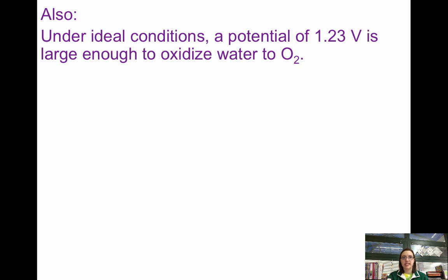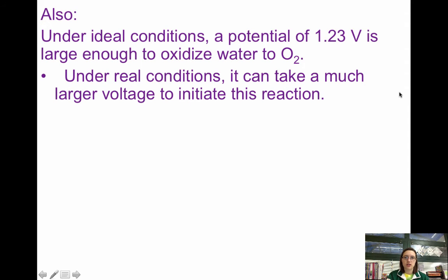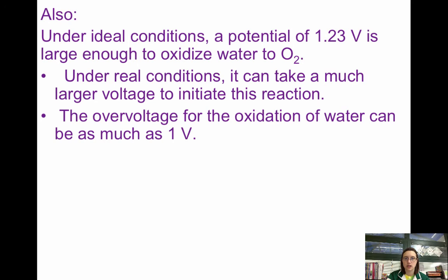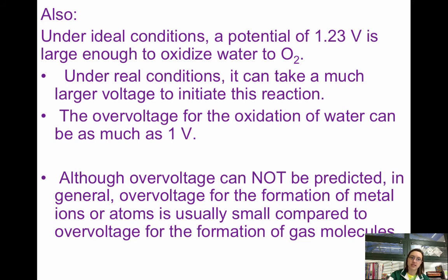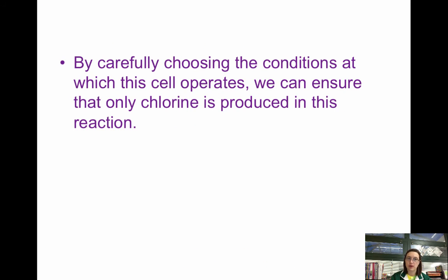Under ideal conditions at standard conditions, a potential of 1.23 V is large enough to oxidize water to O₂. Under real conditions, it can take a much larger voltage to initiate this reaction because it's so slow — the over-voltage for oxidation of water can be as much as 1 V, meaning we'd need 2.23 V for that to occur. Over-voltage cannot be predicted, and the over-voltage for formation of metal ions or atoms is usually really small compared to over-voltage for non-metals like gas molecules. By carefully choosing the conditions of the electrolytic cell, we can ensure chlorine is the only product.